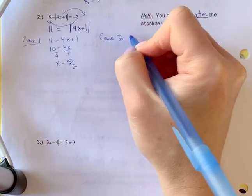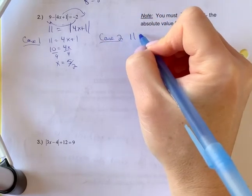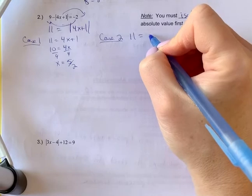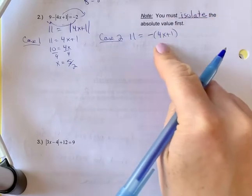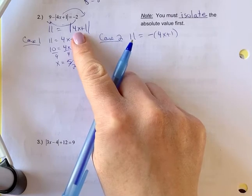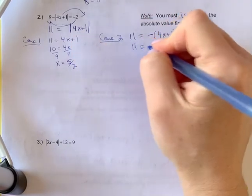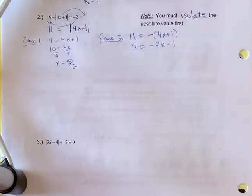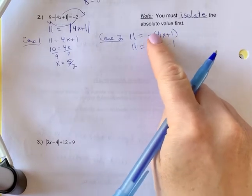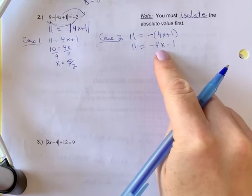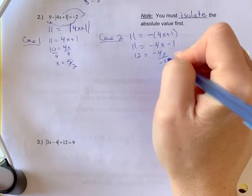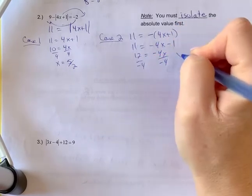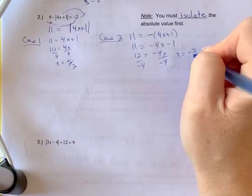In case two, we're going to have eleven equals, and now you're going to bring a negative sign through the absolute value part of that equation. So if you can visualize the negative sign changing both signs, you can jump to that step. Moving this over, twelve equals negative four x. Divide negative four off, and you get x equals negative three.